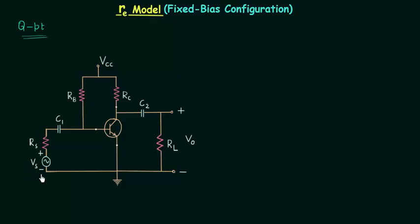Vs is the input voltage with resistance RS. Vo is the output voltage and it is the voltage across the load resistance RL.